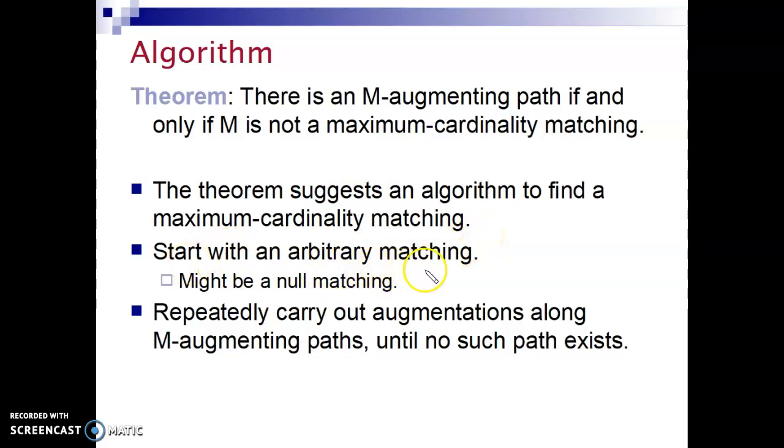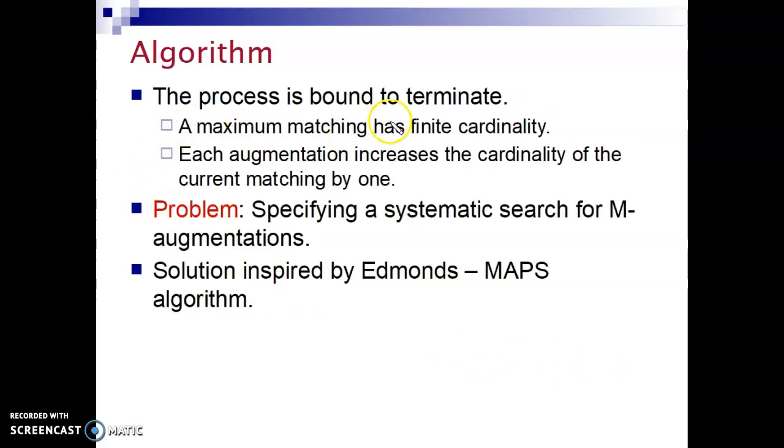So this theorem suggests an algorithm to find a maximum cardinality matching step by step. We start with an arbitrary matching. This can even be a null matching. And repeatedly carry out augmentations along M augmenting paths until no such path can be found. This process is bound to terminate because a maximum matching has finite cardinality. And each augmentation increases the cardinality of the current matching by one.